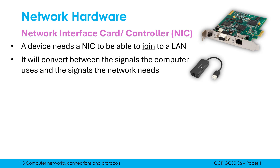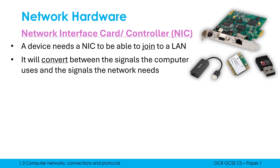Here is a NIC connected to a USB port — ethernet going in, but then converting to USB, which is different to the desktop computer version. Here is a wireless network interface card for a phone, converting between wireless signals and what the phone uses. And here's another USB one which is also for a wireless network. So it's a very underrated bit of hardware which pretty much every device has.